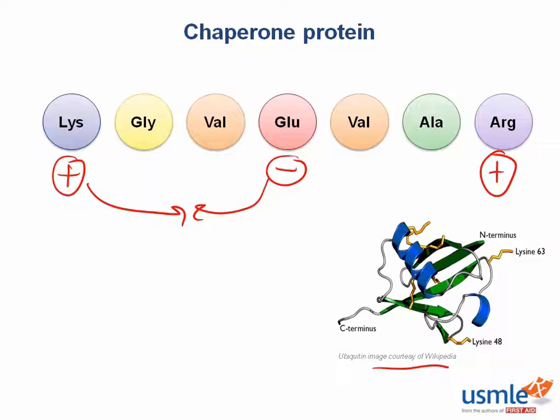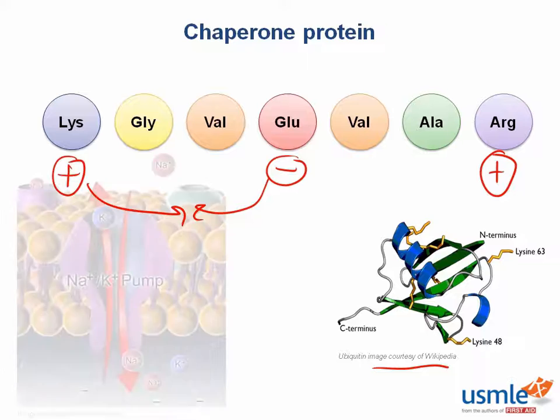However, if there's a protein with mostly nonpolar amino acids on the outside, where do you think you might find it? This would probably be embedded in the cell membrane, since nonpolar amino acids are happy around lipids. Here's an example — a sodium-potassium pump.